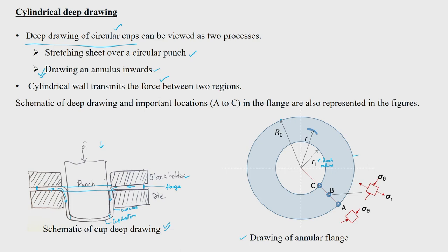The punch is perpendicular to the plane of this diagram and moves downwards, while the sheet gets an inward movement so that it forms a cup. There has to be an appropriate diameter or radius of the sheet to form a successful cup. We define three locations in the flange: A at the edge of the flange, B somewhere in the middle, and C in the die corner.